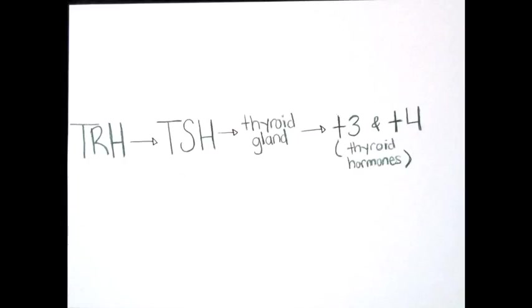Every cell in the body depends upon thyroid hormones for regulation of their metabolism. If T3 and T4 were not present, the body would constantly be out of homeostasis.